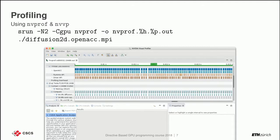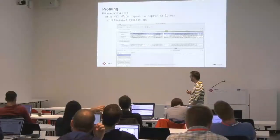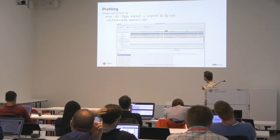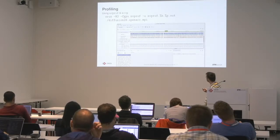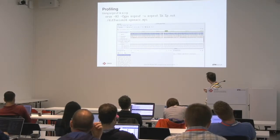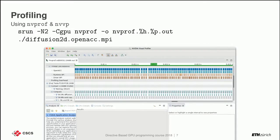In NVVP you can see different categories: time spent in OpenACC, the runtime API, the driver API, and your kernels — sorted by importance. This is the kernel that takes the most time. You also see the timeline and how well occupied the GPU is. If you click on any kernel, you get information about how it was invoked, plus occupancy information and more.